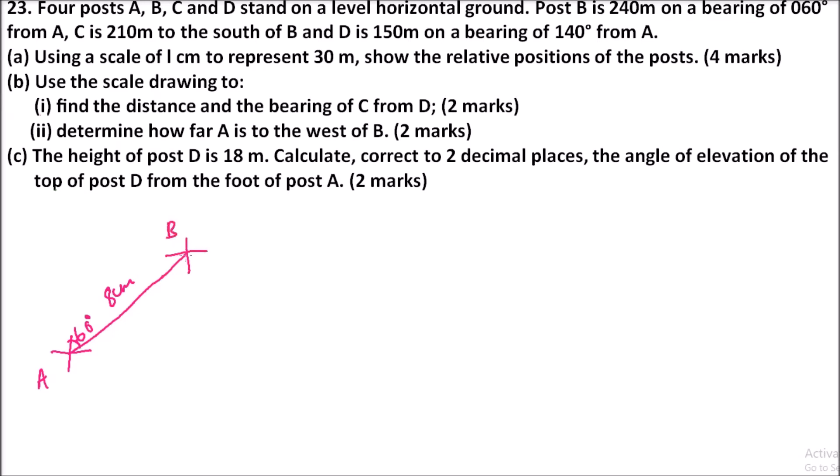Then we are told that C is 210 south of B, so you extend this line. Since it is 210, you measure 7 centimeters. 210 divided by 30 is 7.